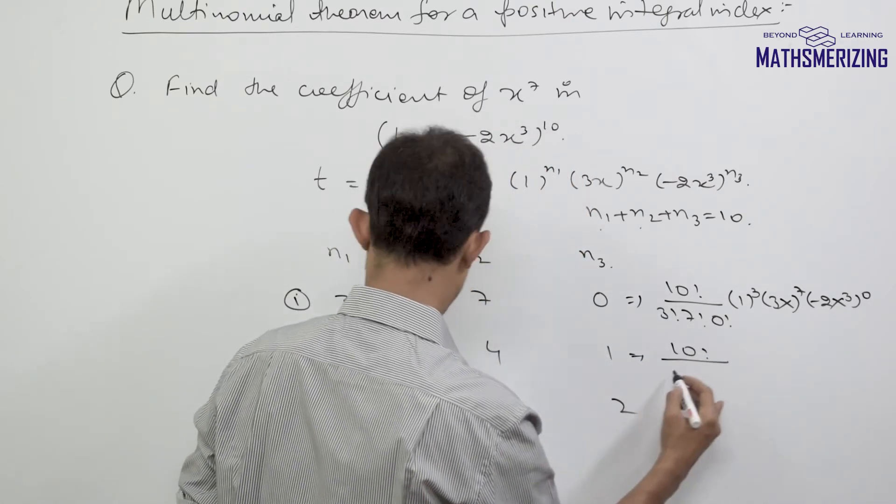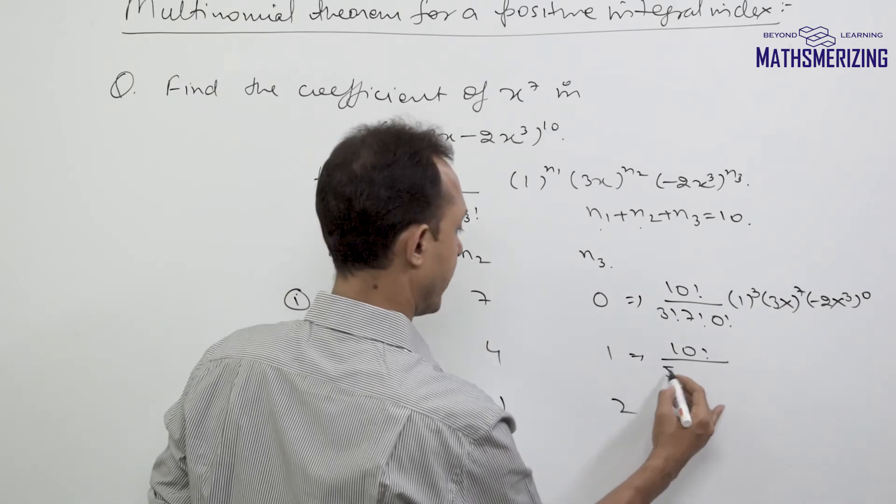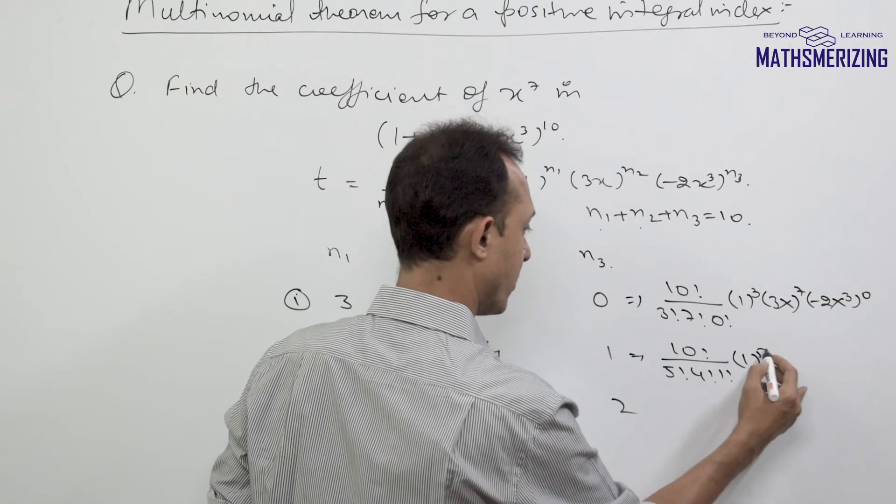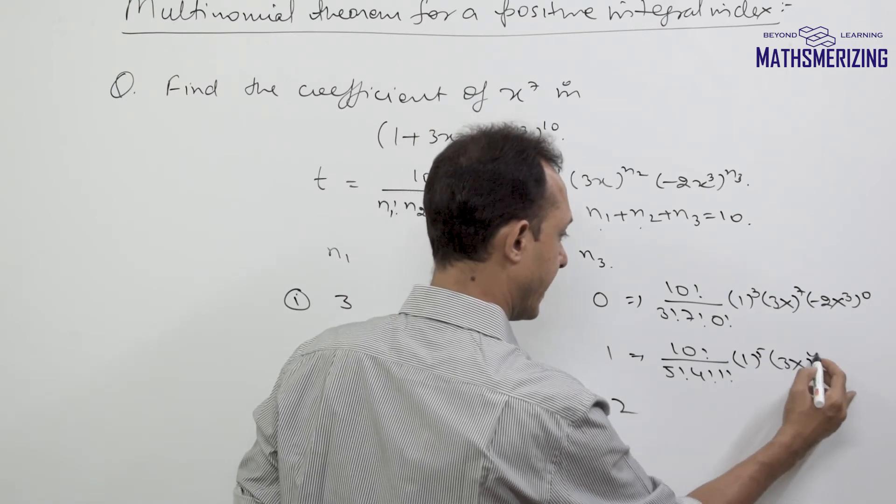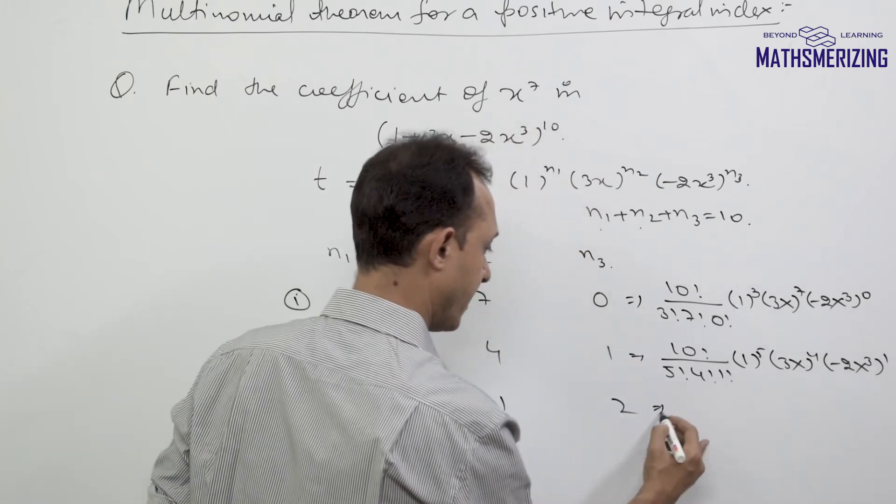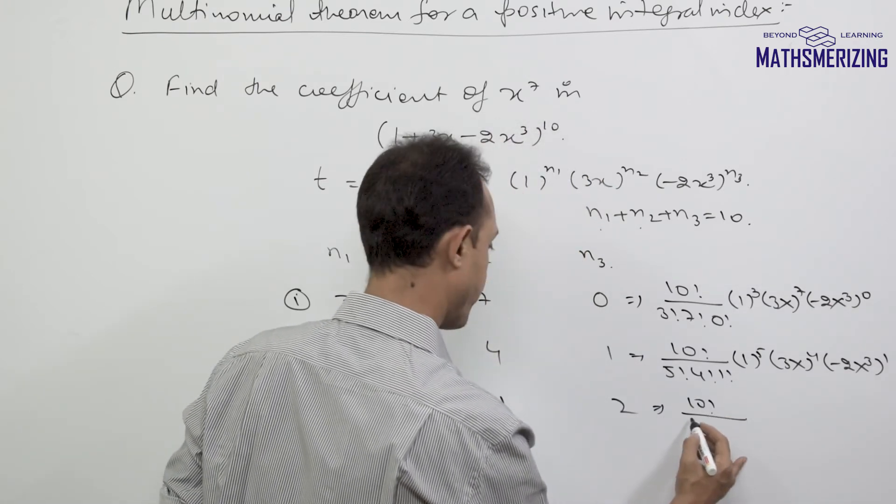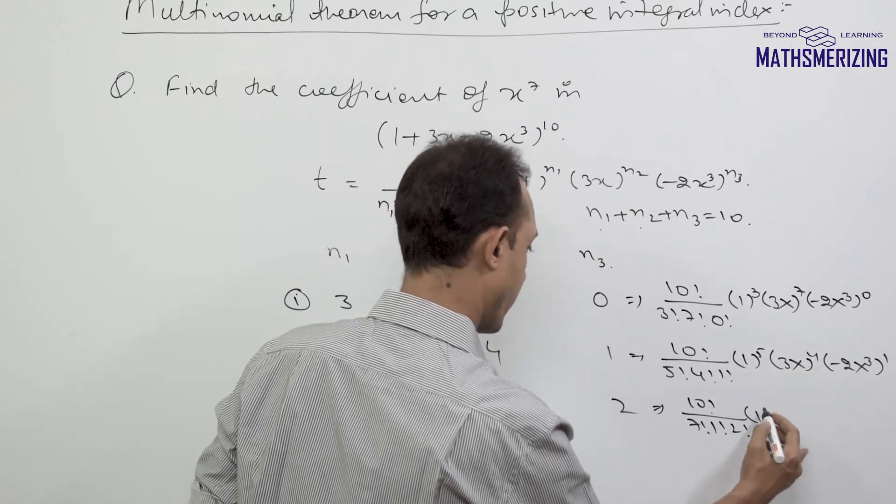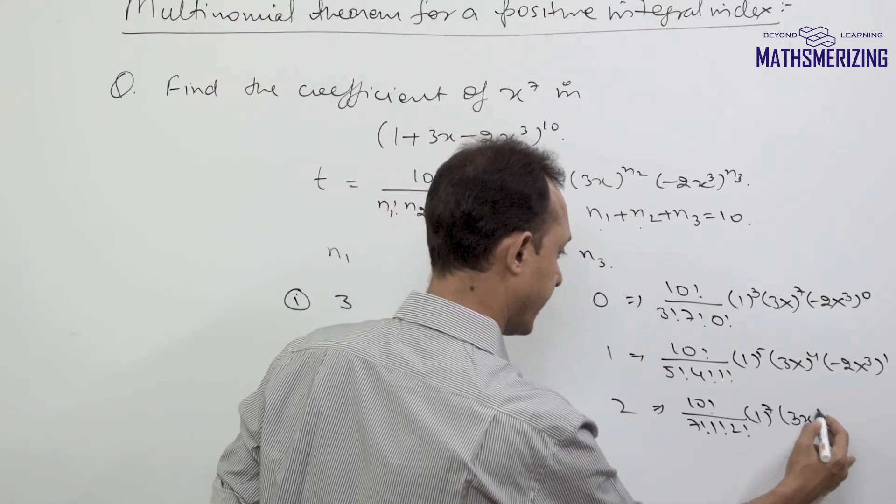This term will be 10!/(5! 4! 1!) times 1^5 times (3x)^4 times (-2x³)^1, and this one will be 10!/(7! 1! 2!) times 1^7 times (3x)^1 times (-2x³)^2.